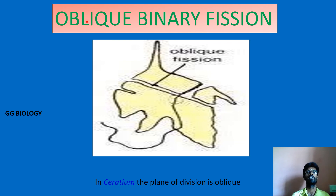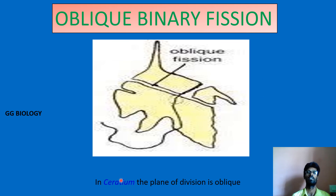The last type of binary fission is oblique binary fission, whereby fission occurs obliquely in the parental cell, producing two daughter cells which then develop into adults. Such a type of reproduction, where division happens along the oblique plane, is called oblique binary fission. This is seen in the case of another protozoan, a dinoflagellate, with the example being Ceratium. With that, binary fission is concluded, and regarding multiple fission we will discuss in the next video.